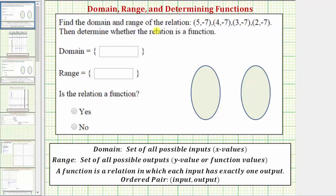We want to find the domain and range of the relation given here as a set of ordered pairs, and then we're asked to determine whether the relation is a function.